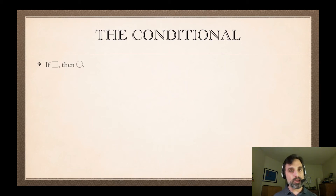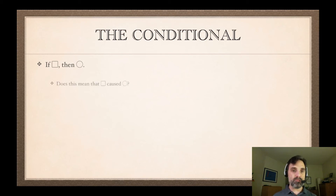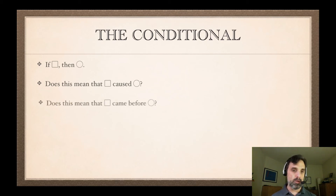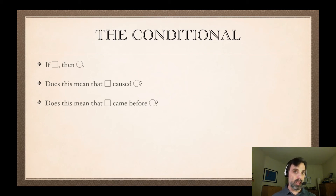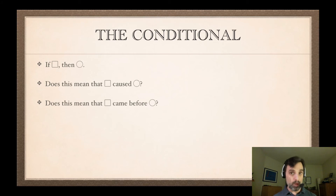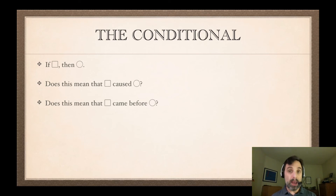I'll make a couple of points now and more later when we get to chapter two. Consider the conditional 'if square, then circle,' where square and circle are some English sentences. You might wonder: if that's true, does it follow that square caused circle? Does it mean that square came before circle? Well, we can come up with examples where all of that is true — for instance, 'if I exercise regularly, then my fitness will improve.' The regular exercising causes the fitness improvement, the antecedent being true causes the consequent being true, and the working out precedes the fitness improvement in time.